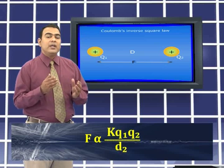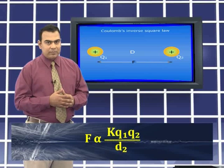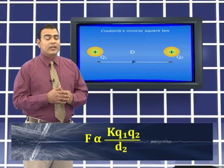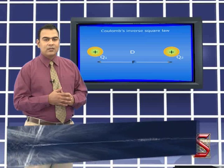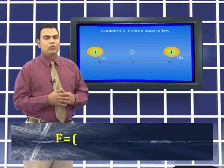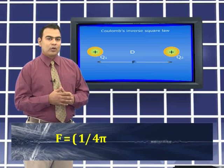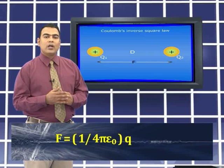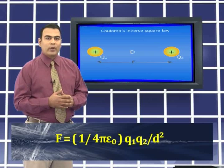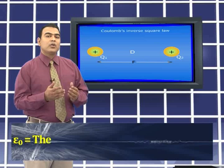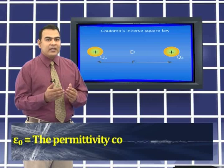It depends on the medium in which the charges are placed. The equation can also be given as F equals 1 by 4π epsilon naught into q1 q2 by d square, where epsilon naught is the permittivity constant in a vacuum.